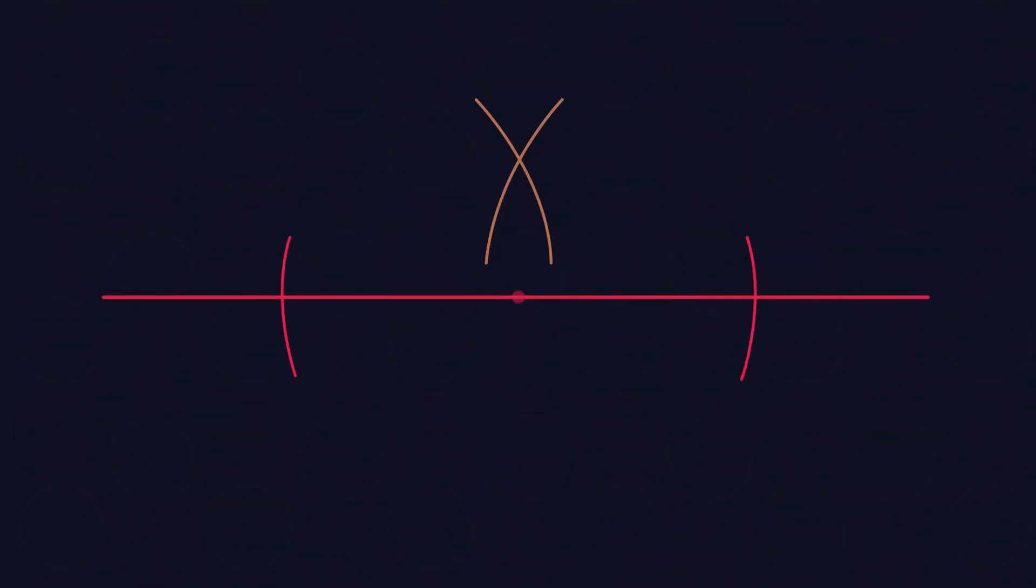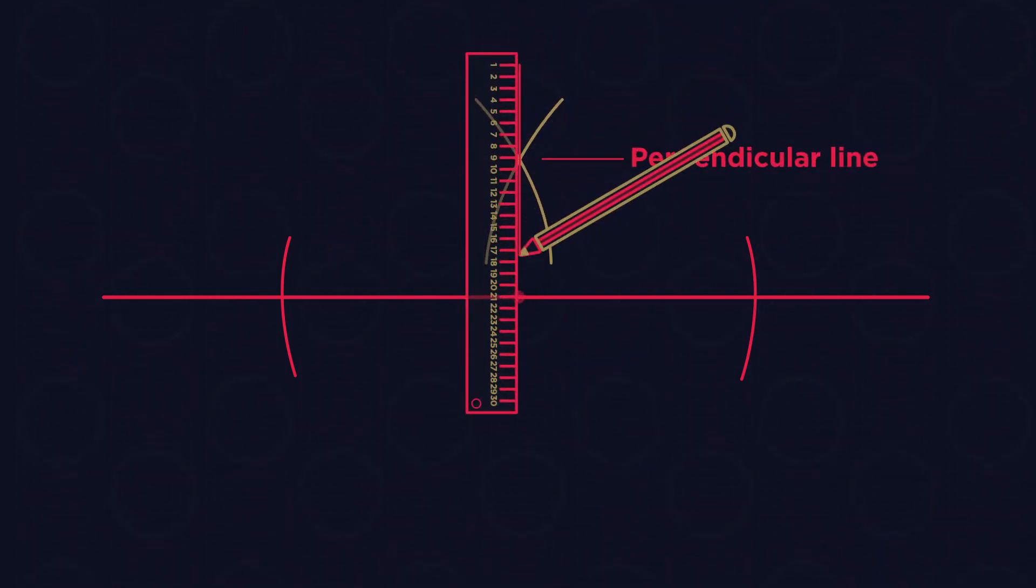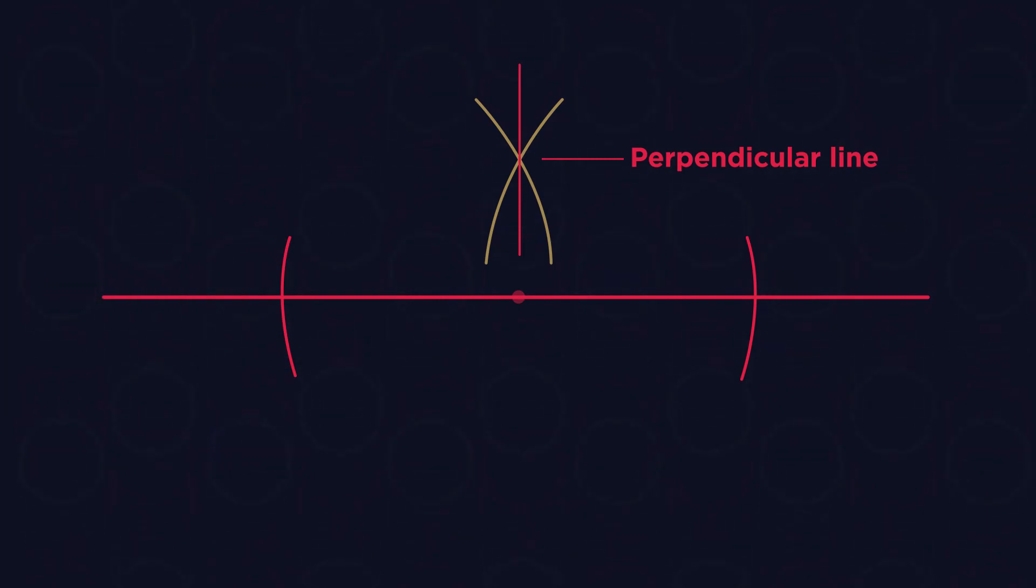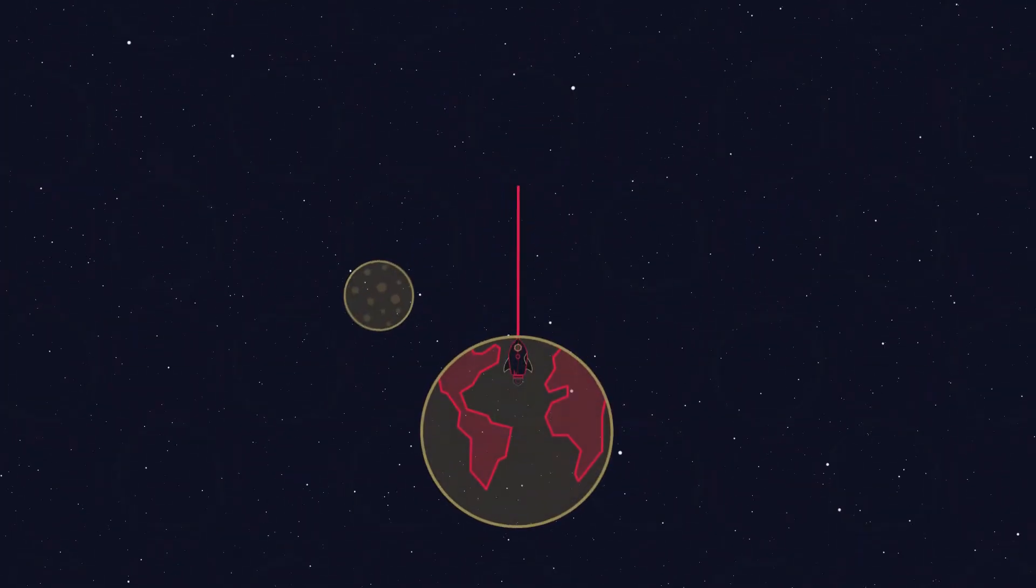Where your second set of arcs cross each other is the perpendicular line from the point. With your ruler, draw on the line. So we can see that the rocket is safe to fly on this path.